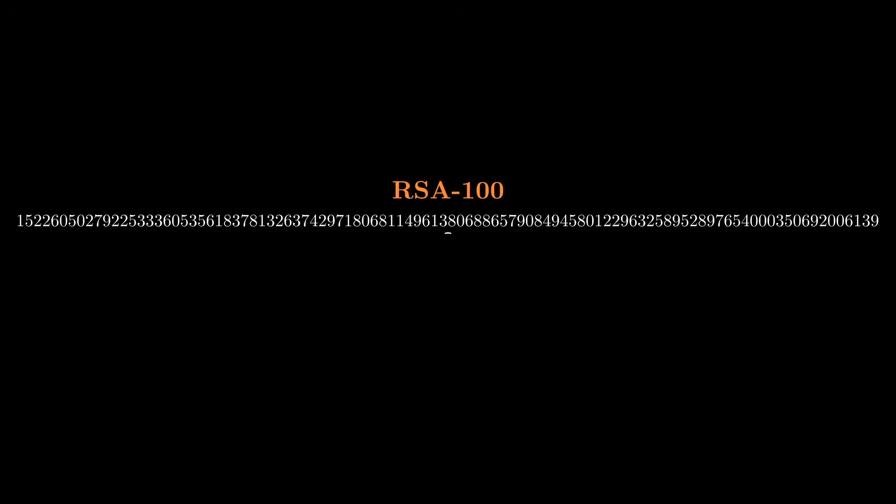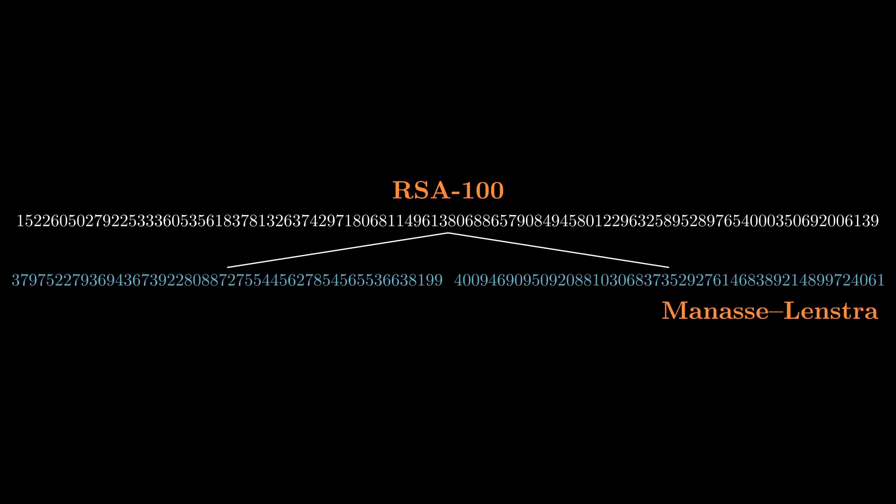they published several large numbers, each one attached to a cash prize for the first team to factor it. RSA-100 was the smallest of these numbers. And two weeks later, it was factored by Manasse and Lenstra, who took home a thousand dollars for their trouble.